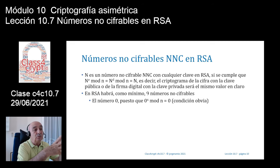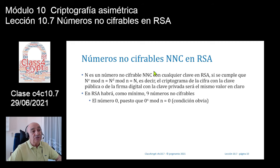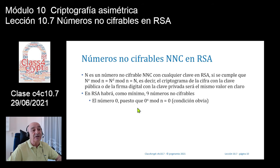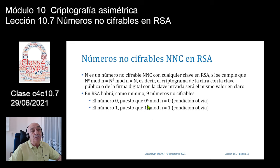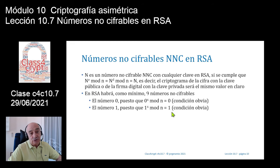Dentro de esos nueve números, el número cero lógicamente va a ser no cifrable, porque si cifro el número cero y lo elevo a X, siendo X la clave pública o la clave privada, y lo reduzco a módulo N, lógicamente me sale un cero. Lo mismo sucede con el número 1: si lo elevo a la clave privada o la clave pública y lo reduzco a módulo N, me sale el número 1. Son dos condiciones obvias.